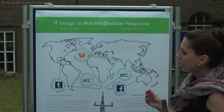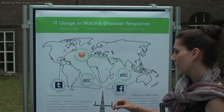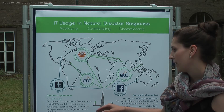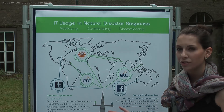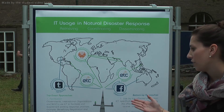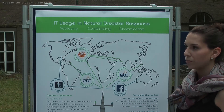First of all, big organizations — for example governments, international organizations, and NGOs — are using ICT in order to respond to natural disasters. On the other hand, ICT is also used by the local population after a disaster.